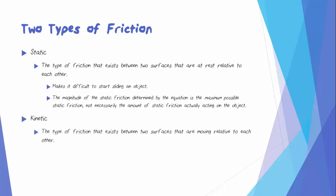Kinetic friction is the type of friction that exists between two surfaces that are moving relative to each other. This is the type of friction that either makes it difficult to keep something moving or slows down an object that is already moving.